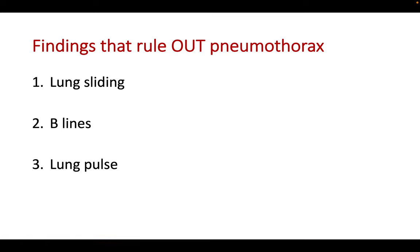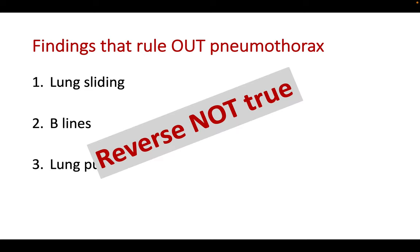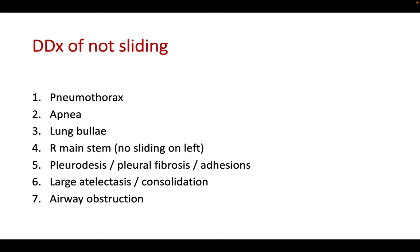In short, three findings — if present — will rule out pneumothorax: lung sliding, B-lines, and lung pulse. However, the reverse isn't true: the absence of lung sliding with no B-lines and no lung pulse does not mean the patient definitively has pneumothorax. There is a differential diagnosis — for example, a non-breathing patient will have no sliding, a large lung bulla will have no sliding, and right main stem intubation will cause absent sliding on the left-hand side.